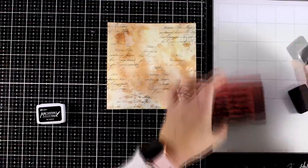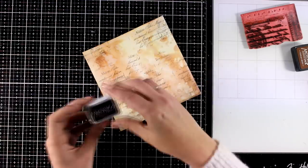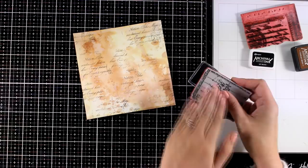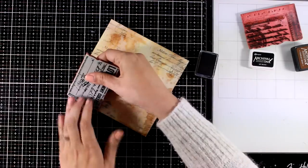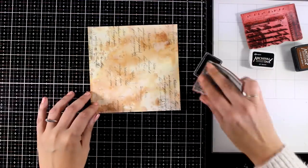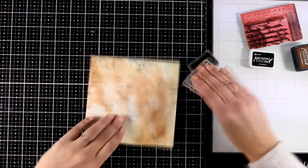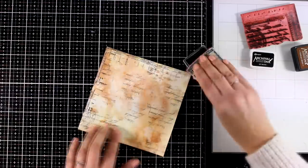Then I'm going to use another stamp with a smaller text, and this time I'm working with black ink, again Archival ink. I'm going to go all around the borders. This way I'm creating kind of a darker frame, which is a technique that I absolutely love and repeat on my pages again and again.